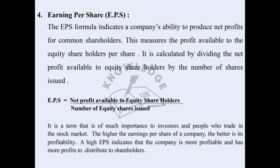The next is Earning Per Share. Earning Per Share indicates a company's ability to produce net profit for the common shareholders. It measures the profit available to the equity shareholders per share. It is calculated by dividing the net profit available to the equity shareholders by the number of shares issued.